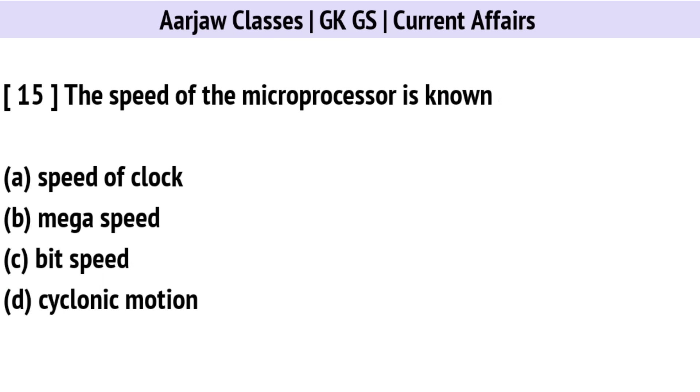The speed of the microprocessor is known as? The correct option is A: Speed of clock.